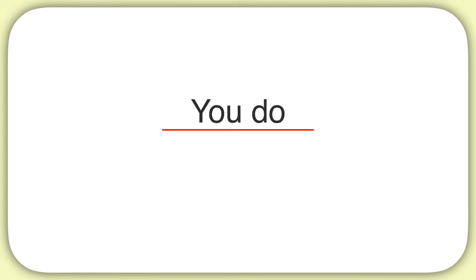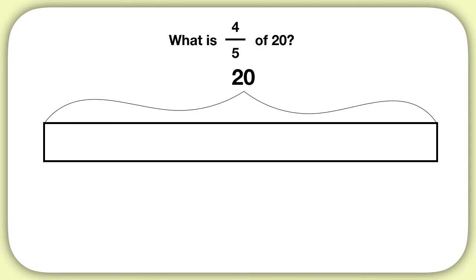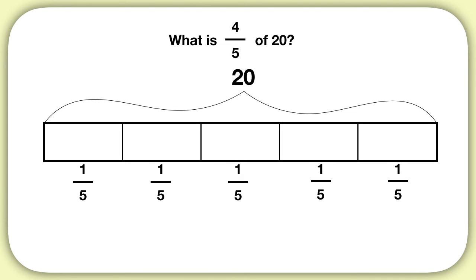Now it's time for you to practice on your own. What is four-fifths of twenty? Start with a bar model to represent twenty. To find four-fifths, break your bar into five pieces. That way, each piece is one-fifth of the total. Now, if the whole bar is twenty, and we're splitting it into one, two, three, four, five sections, each section will have four in it.